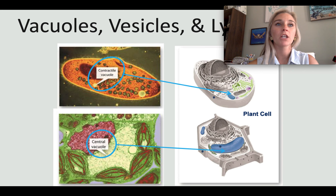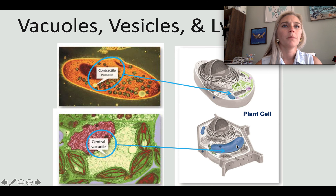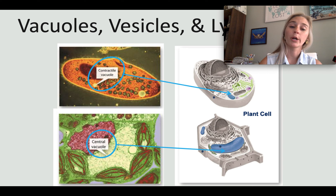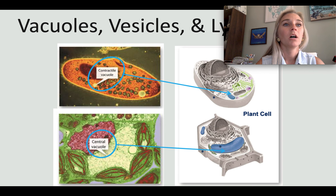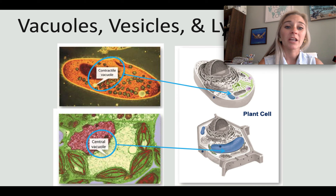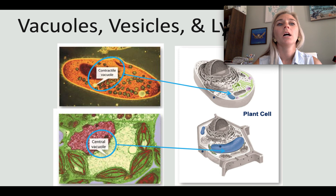There are different types of vacuoles. Plant cells normally have a large central vacuole, and its size changes depending on how much water is in the cell. If a plant is wilting, the vacuole is empty; when you water your plants and they perk back up, that's because the vacuole refills. A paramecium regulates its water balance with a contractile vacuole, which continually fills with excess water from the cytoplasm and then expels it.